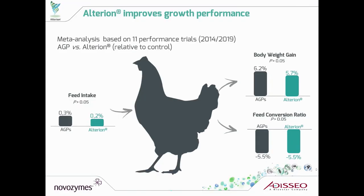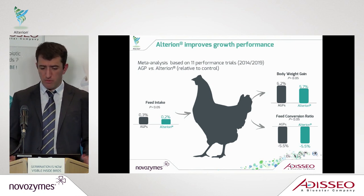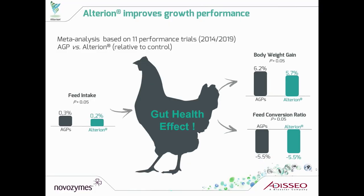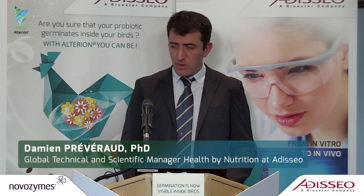We have conducted over the last few months a compilation of different in vivo trials, comparing the effect of Alterion as an alternative to antibiotic growth promoters (AGPs). You can see from the output of this meta-analysis that when Alterion is added to the feed of broilers, feed intake does not increase — meaning the effect is not coming from higher feed intake but from what happens at the gut level. Body weight and feed conversion ratio are both improved. We therefore consider Alterion a consistent alternative to antibiotics, as the modes of action are well proven, and in terms of performance it is as good as AGPs.